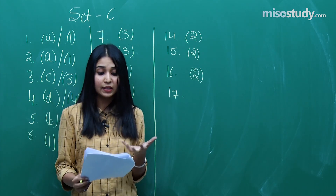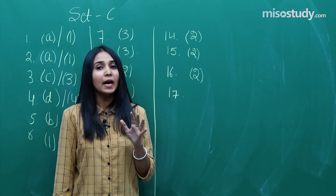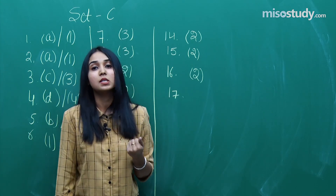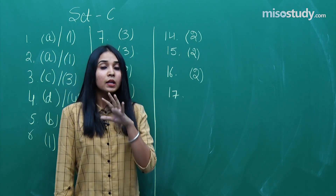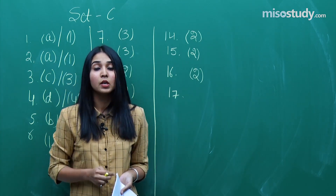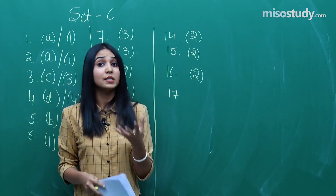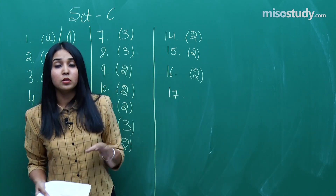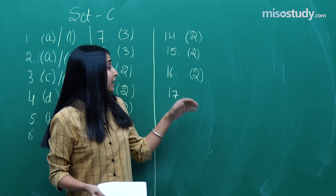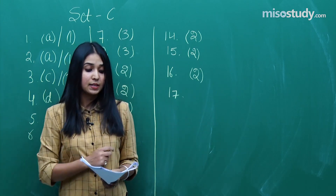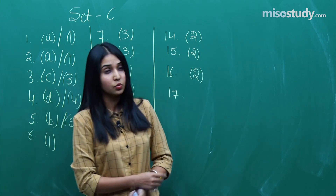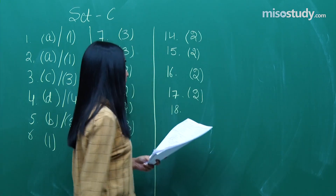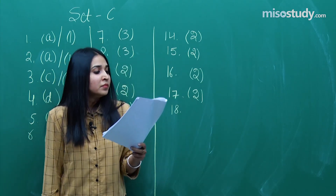Question number 17 was from redox. Looking at the overall paper this year, the examiner tried to just touch topics — even with superficial study you could have been able to clear JEE Mains. The correct option for question 17 is option 2 again — option 2 is really the examiner's favourite this time.